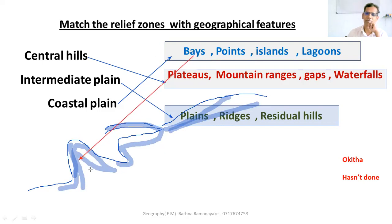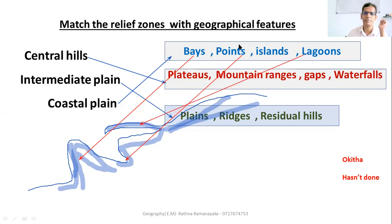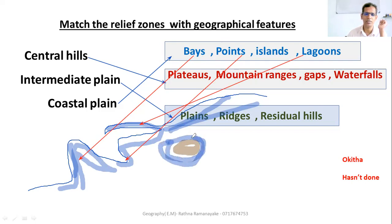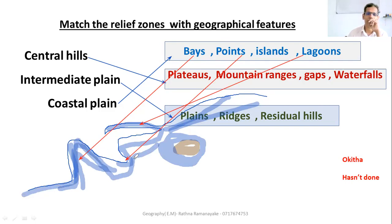This is a point. This is a lagoon. This is an island — a small land surrounded by sea. These are coastal features: bays, points, lagoons — that's it.